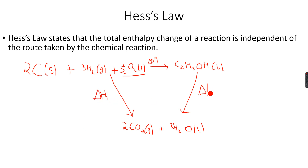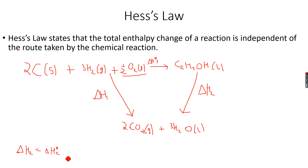Let's take this as delta H1 and this as delta H2. It's actually really easy to calculate the standard enthalpy change of combustion, because all we need to do is measure the amount that is burned and the temperature change, then use q = mcΔT to calculate the enthalpy change. Delta H2 is simply the standard enthalpy change of combustion of ethanol, since one mole of ethanol is being burnt in excess oxygen to form these products.